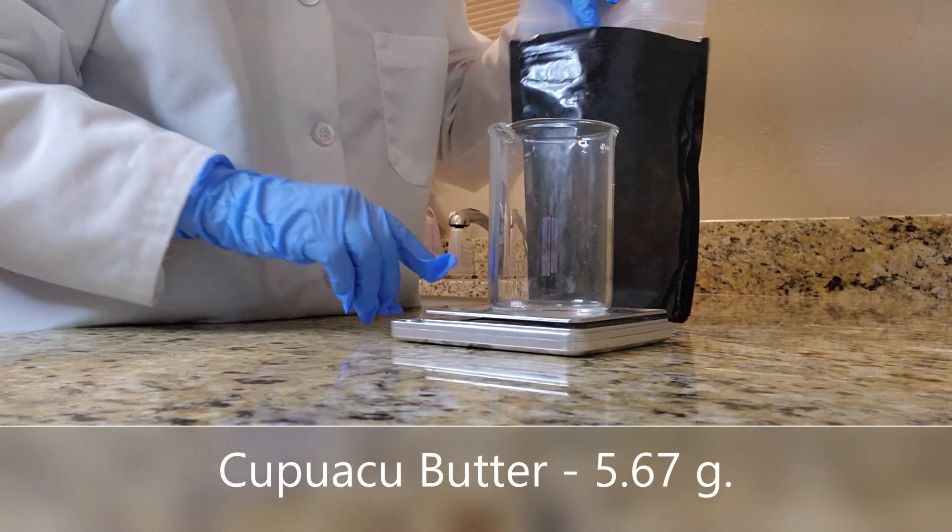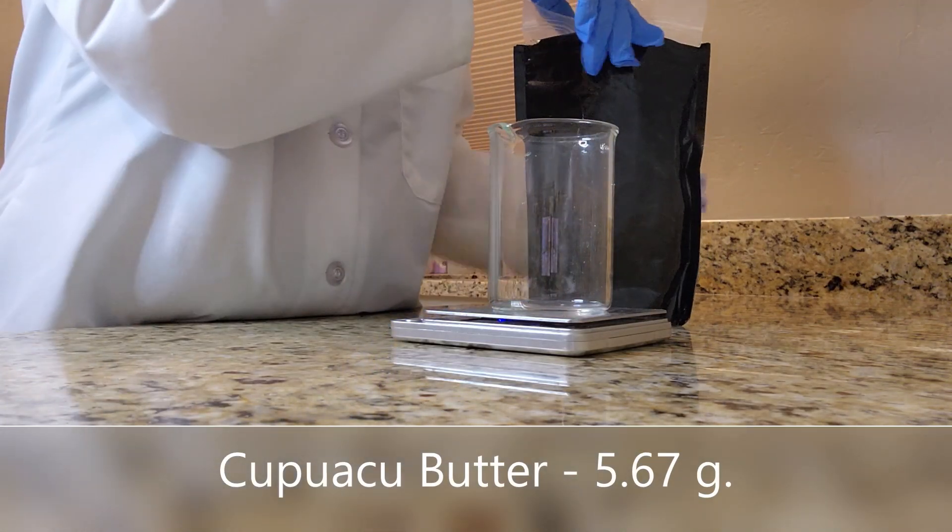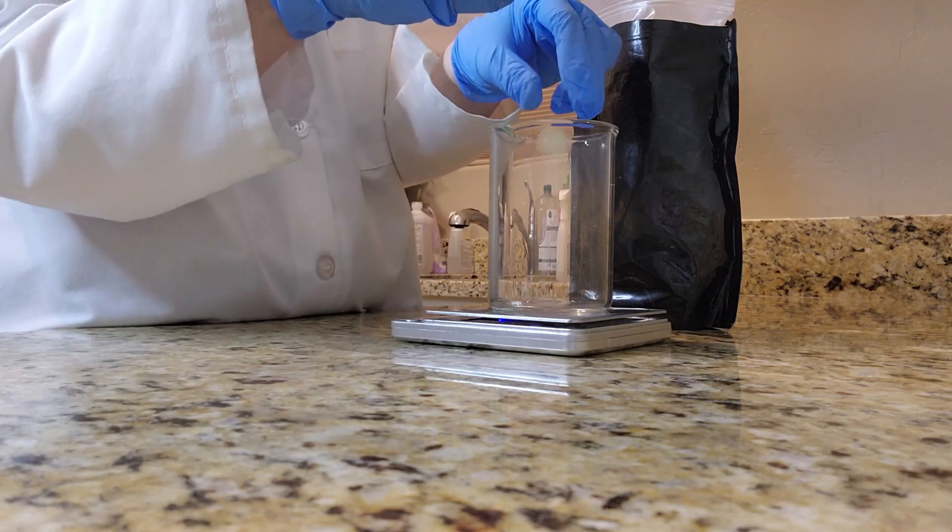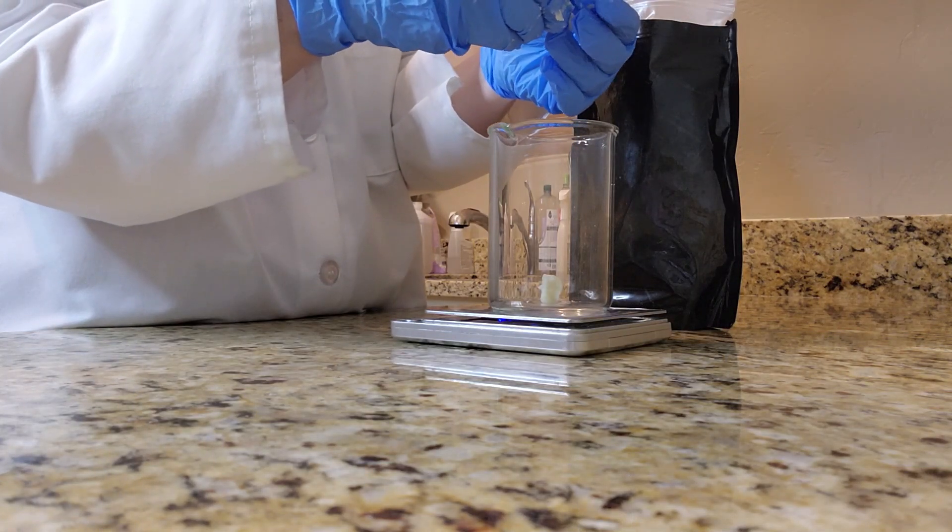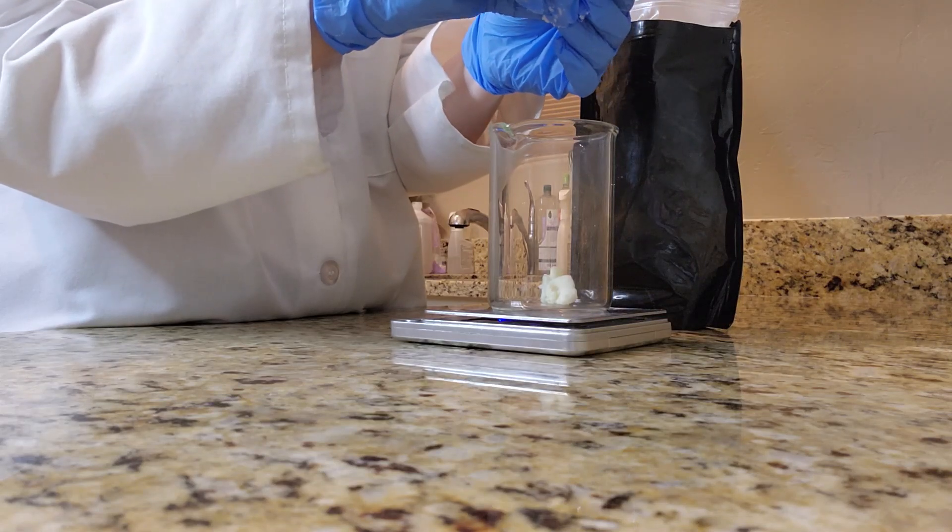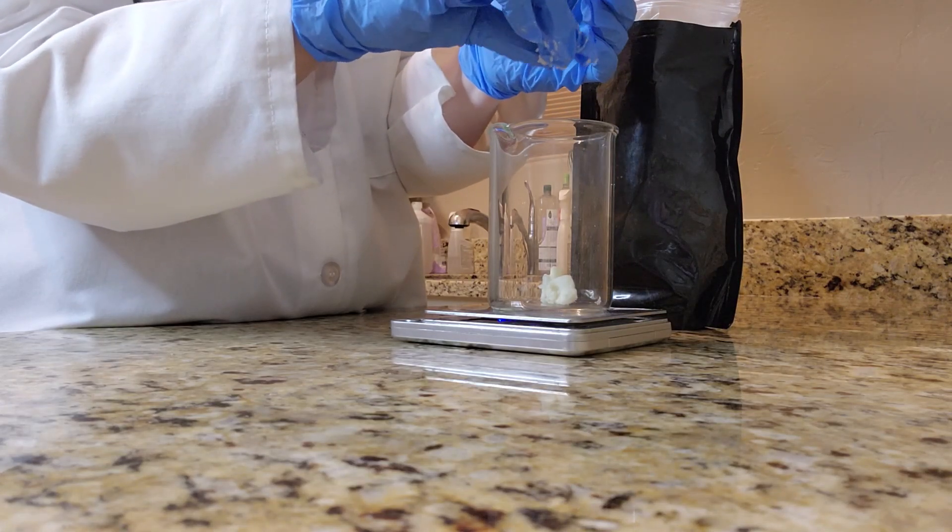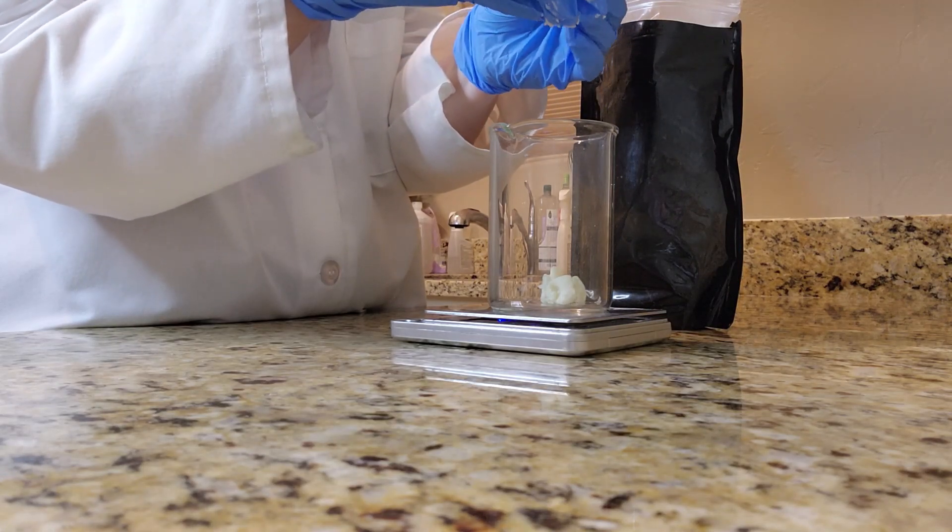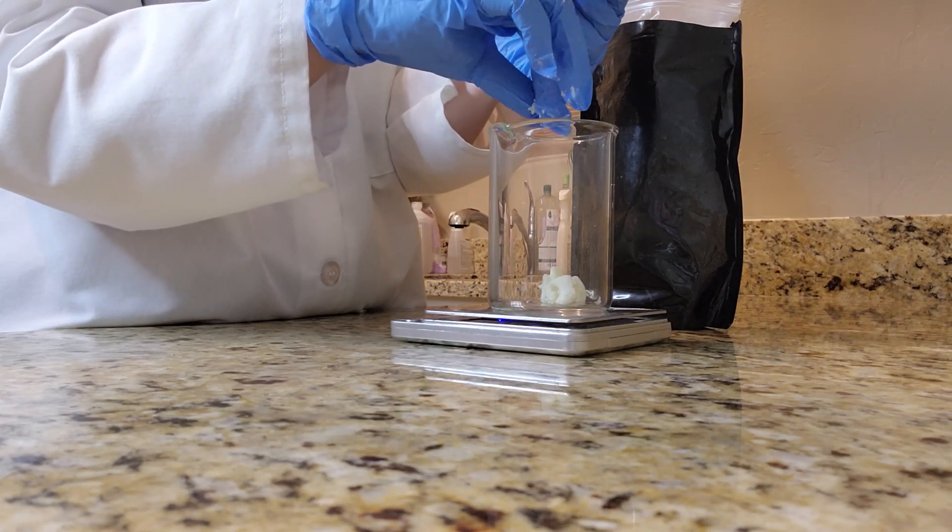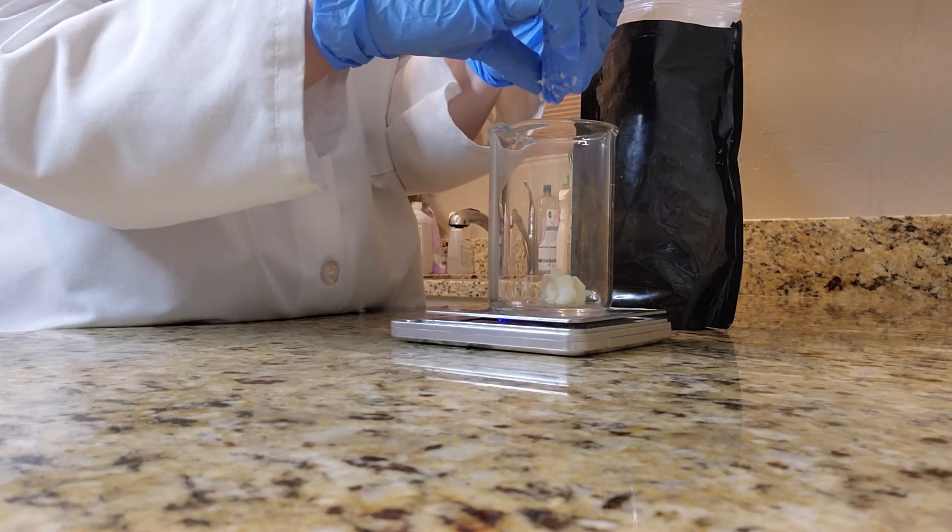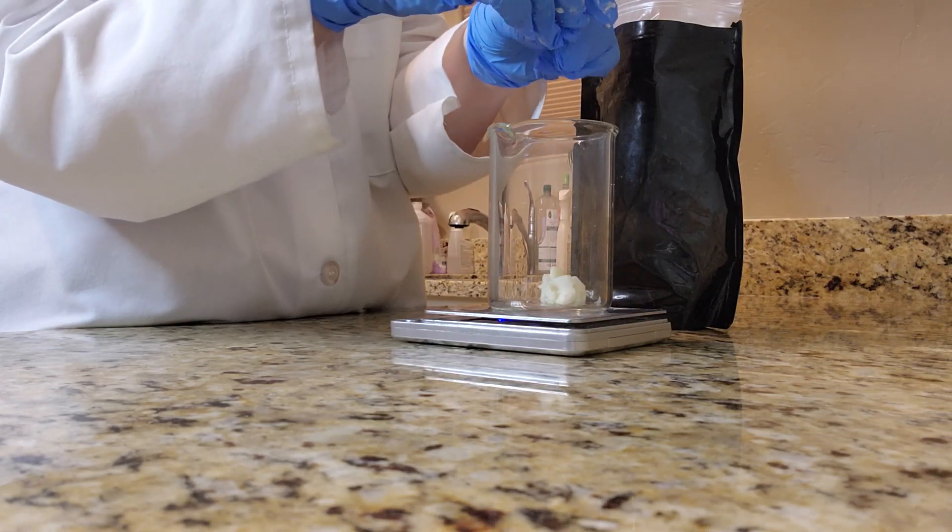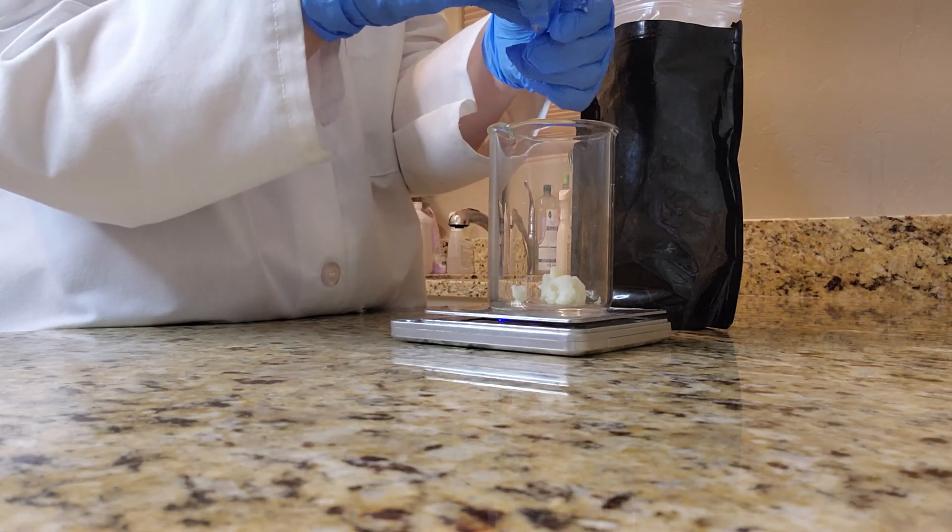To begin making this conditioner, the first ingredient that I will be using today is kapuka butter. This is a very fast absorbing butter and it will help to add some much needed hydration to the hair shaft. It will also leave the hair feeling very nice and soft and it will add some shine and it's great for split ends too. In this particular formula I'm only using a little because a little goes a long way.